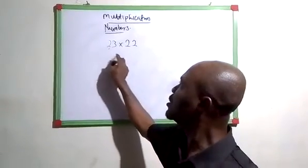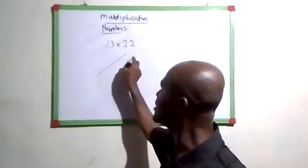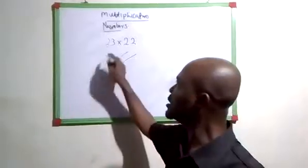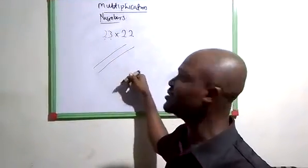For example, the first number here is 2, so you're going to draw 2 lines. The second number is 3, give space and draw 3 lines.